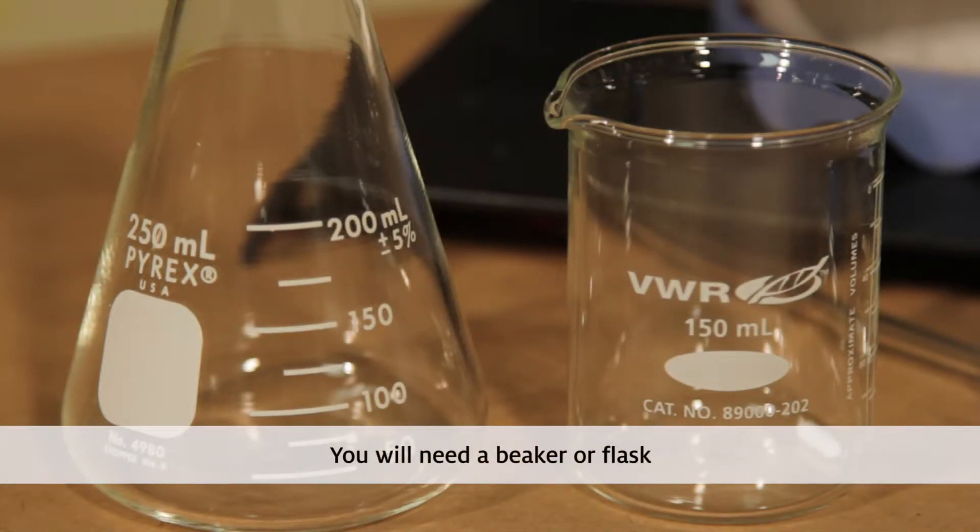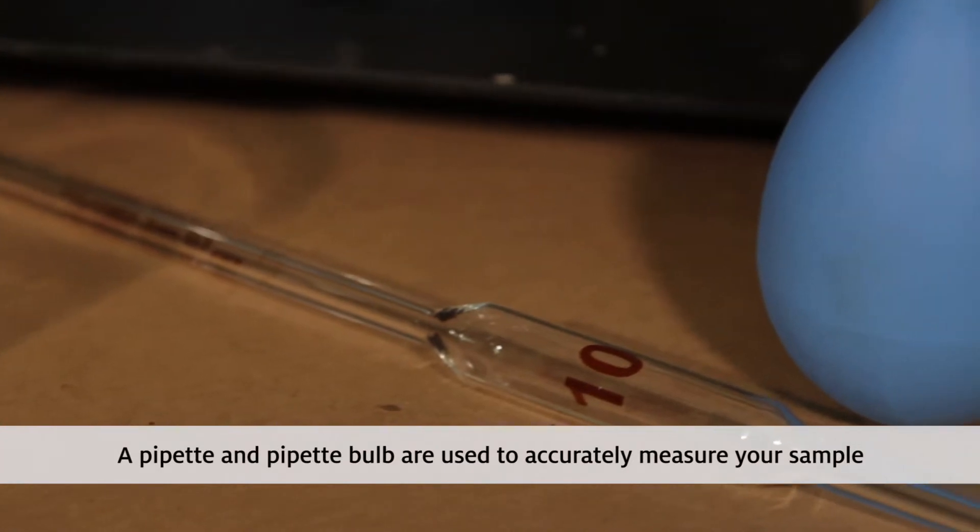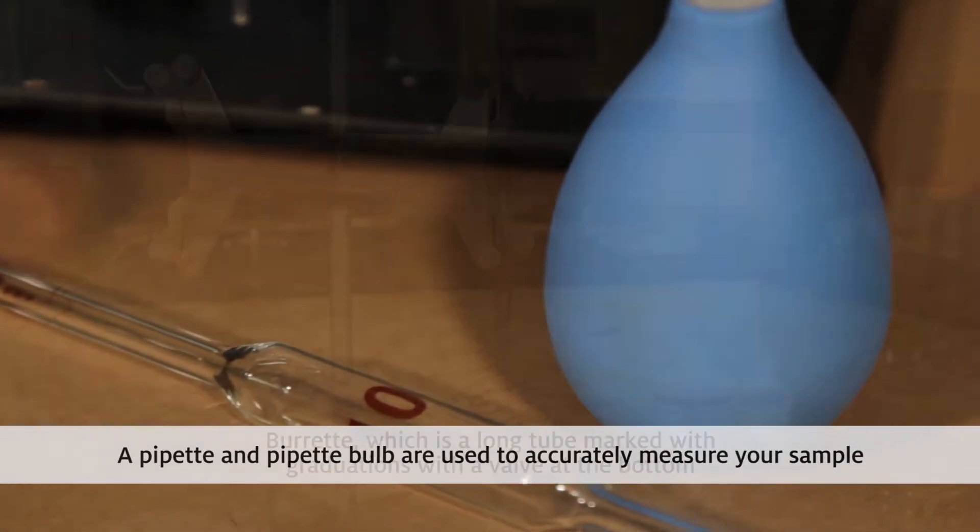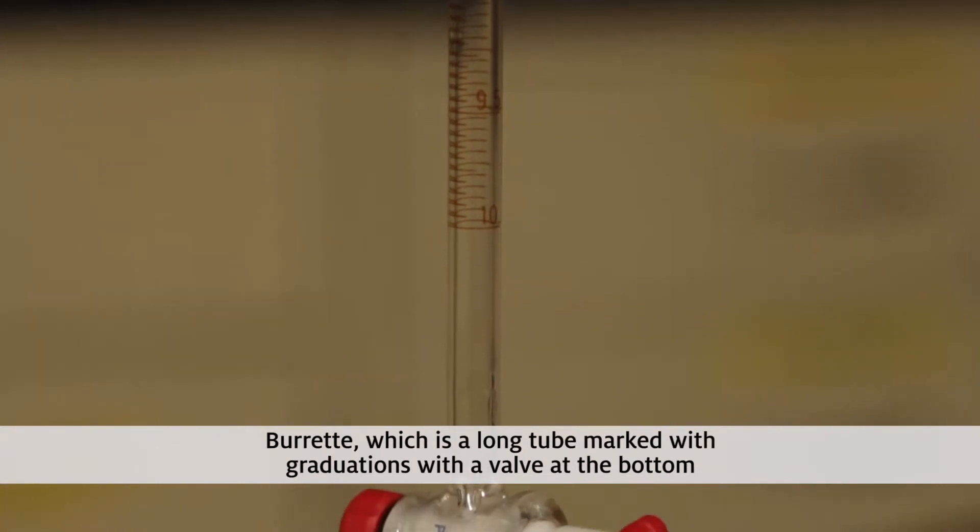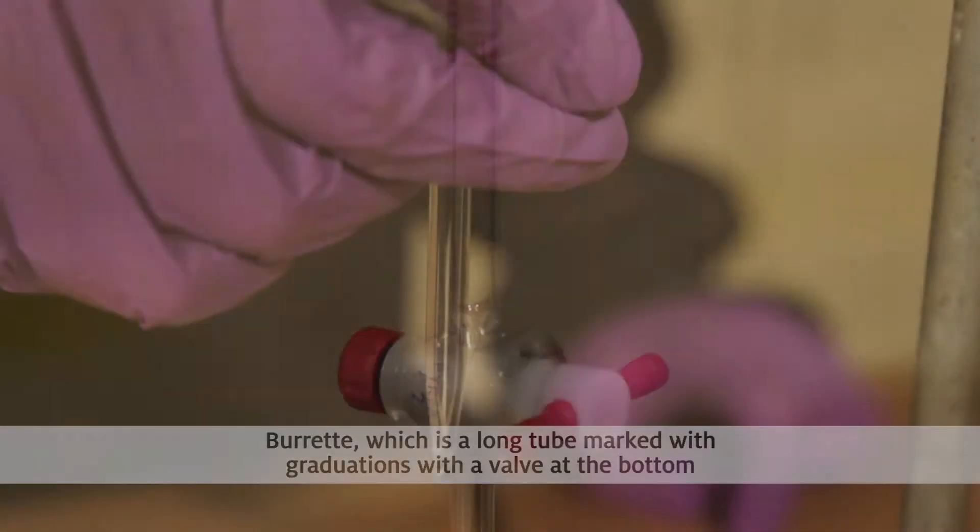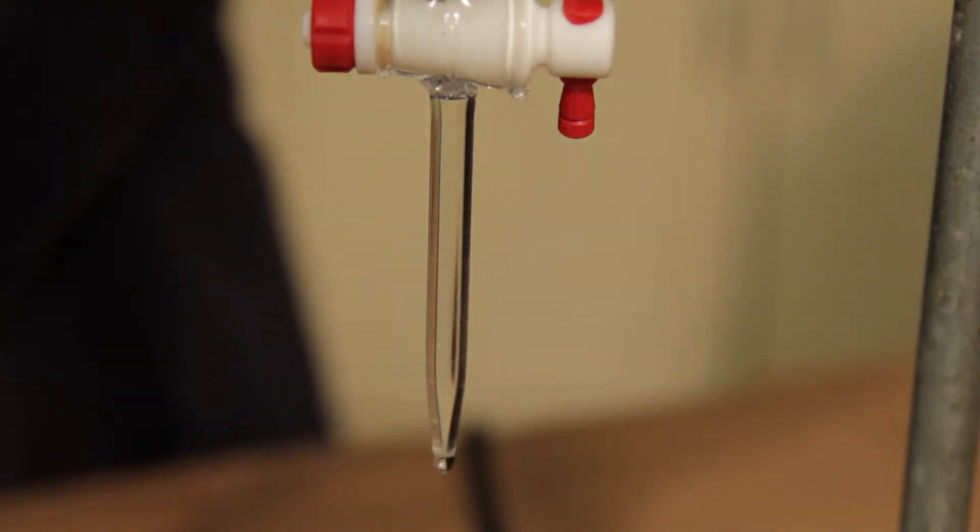You will need a beaker or flask in which to do the titration, a pipette and pipette bulb is used to accurately measure your sample, and finally you need a burette, which is a long tube marked with graduations with a valve at the bottom. It allows you to carefully add controlled amounts of titrant to your sample and easily measure it.